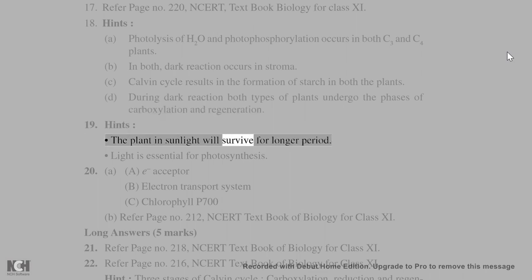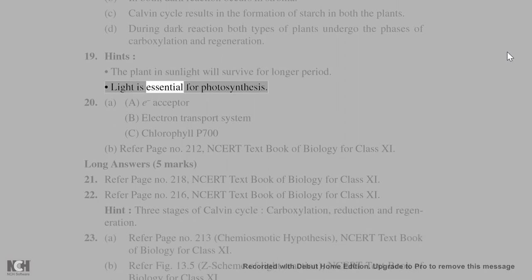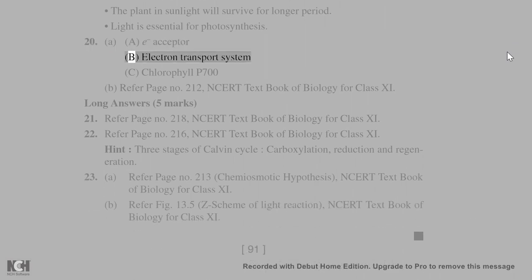19. Hints: The plant in sunlight will survive for longer period. Light is essential for photosynthesis. 20. (a) A - electron acceptor. B - electron transport system. C - chlorophyll P700. (b) Refer page number 212, NCERT text book of biology. Long answers: 21. 22. Hint: 3 stages of Calvin cycle - Carboxylation, Reduction, and Regeneration. 23. (a) Refer page number 213, Chemiosmotic hypothesis, NCERT text book of biology for class 11. (b) Refer fig 13.5, Z scheme of light reaction.